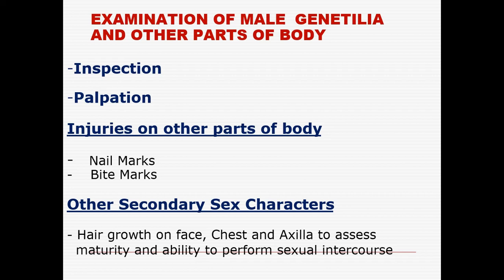After inspection and palpation and determining the status of genitalia, the doctor will note injuries on other parts of the body such as face and chest. Secondary sex characters — extent and quality of hair growth on the face, chest, and axilla of the offender — are also to be noted to assess maturity and ability to perform a sexual act.